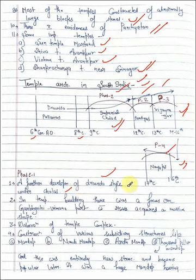In temple building, there was focus on Garbhagriha vimana part which required massive shape. Elaboration of temple complex with construction of various subsidiary structures like Mandap, Nandi Mandap, Ardha Mandap, and Thousand Pillar Mandap. This was entirely new structure and became popular later. It was a huge mandap having various rows of pillars.